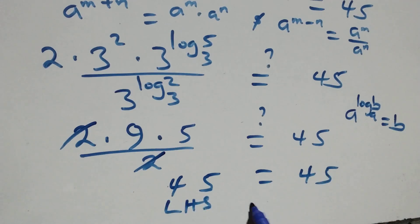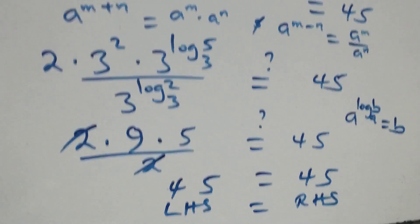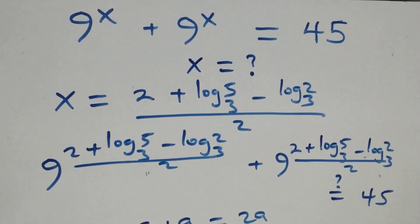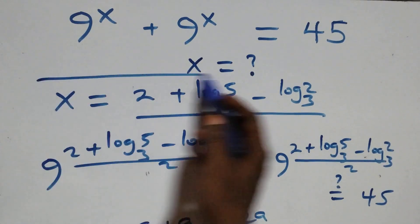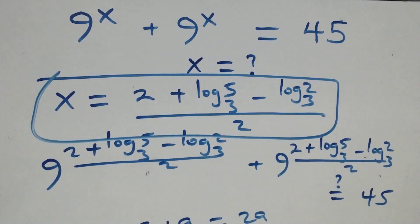Left hand side equals to the right hand side. And therefore, we conclude that x equals to (2 plus log₃5 minus log₃2) all over 2, satisfies this given problem. Thank you for watching. Subscribe for more videos and turn the notification bell on. Share this video with a thumbs up and put your comment. See you next class.